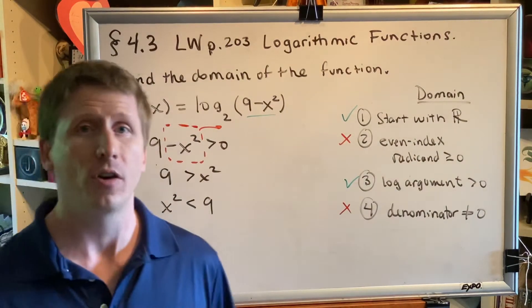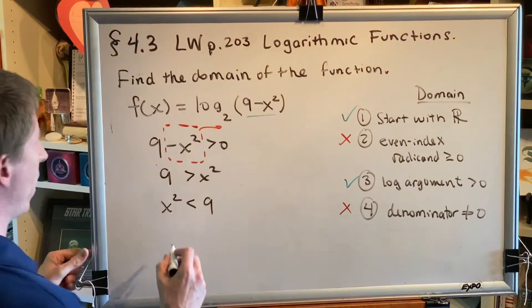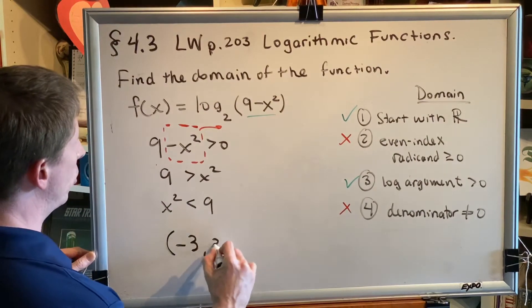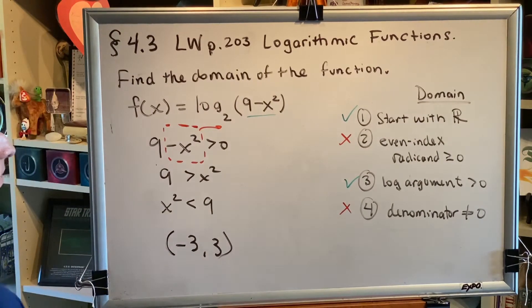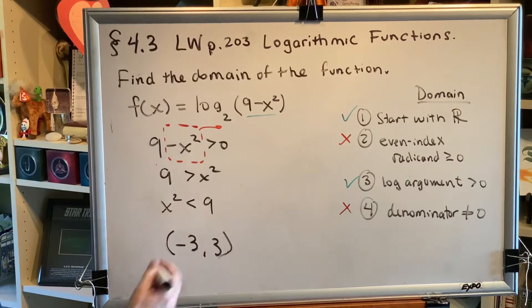Well, this is actually covered in a previous video. We found that as long as x is in the interval negative 3 to 3 with parentheses at both ends, then when we square x, the result will be less than 9. This is very easy to see.